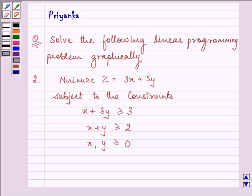Hi and how are you all today? The question says solve the following linear programming problem graphically. This is the second question that we need to proceed on. It says minimize z equals 3x plus 5y subject to the constraints: x plus 3y is greater than or equal to 3, x plus y is greater than or equal to 2, and the value of x and y is obviously greater than or equal to 0.